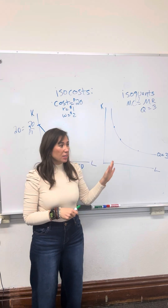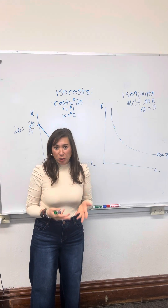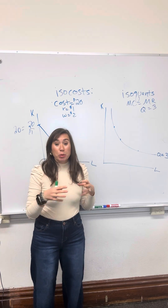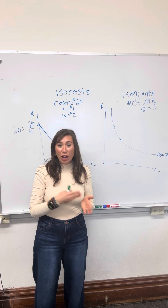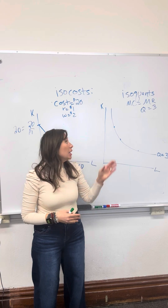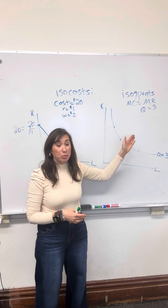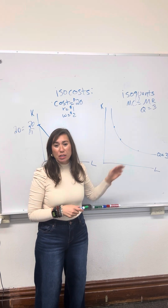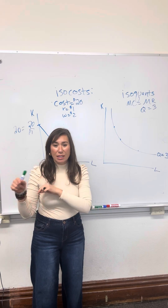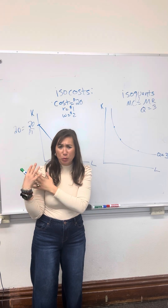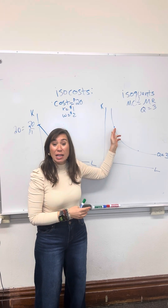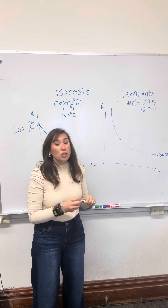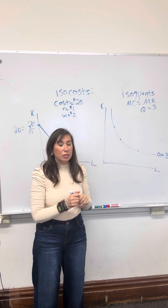The isoquant, on the other hand, is about what is technically available. We might go to engineers or experts on organizing labor to find out: if we want to produce the profit-maximizing quantity — where we set marginal cost equal to marginal revenue and get, say, three units of production — these curves represent all the combinations of capital and labor that will physically get that job done, independent of cost. We can have a very capital-intensive or a very labor-intensive process.